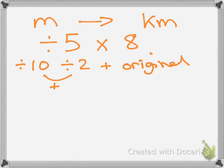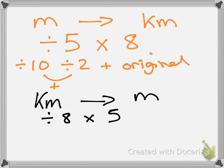If you are going from kilometers to miles, then you do the opposite. You divide by 8, multiply by 5. And if you choose method 2, you divide by 10 as always, divide by 2, and you don't add the original number. You just add those two together.